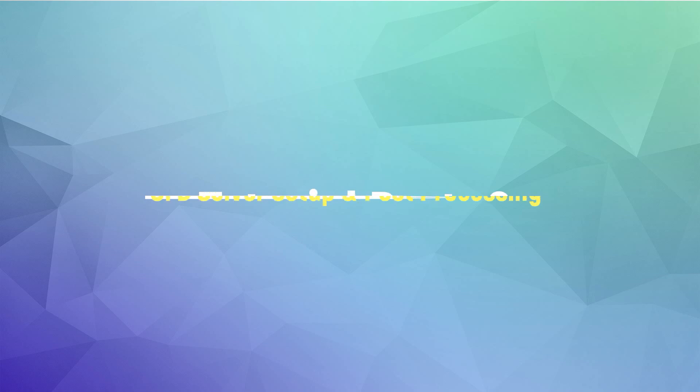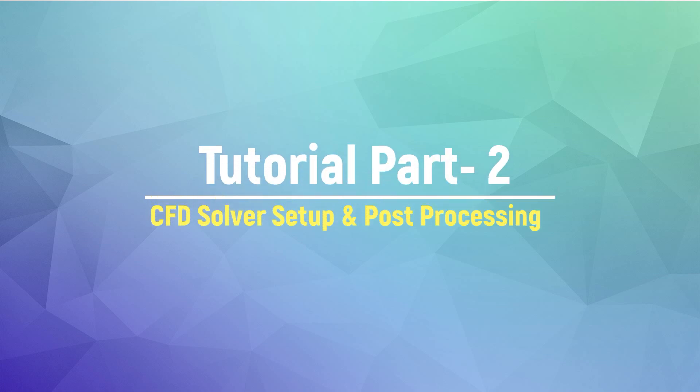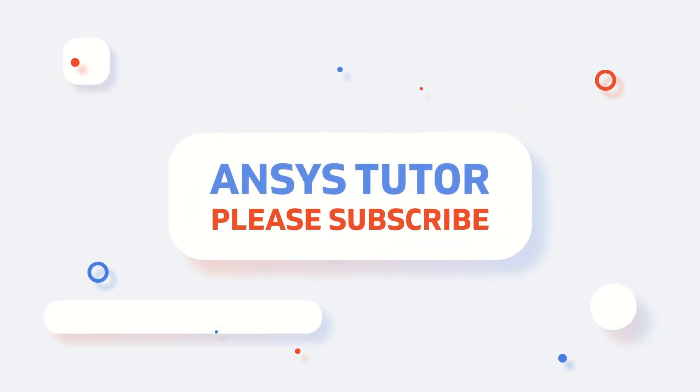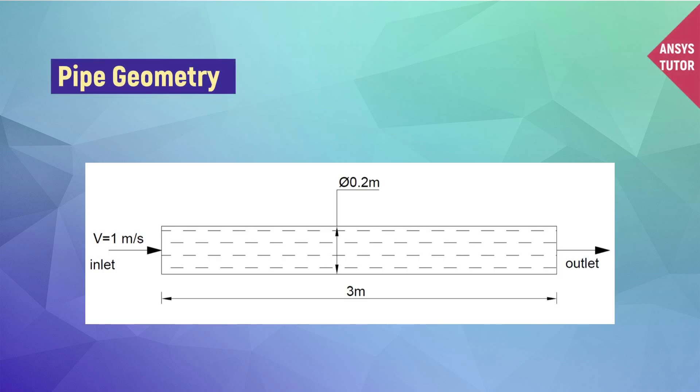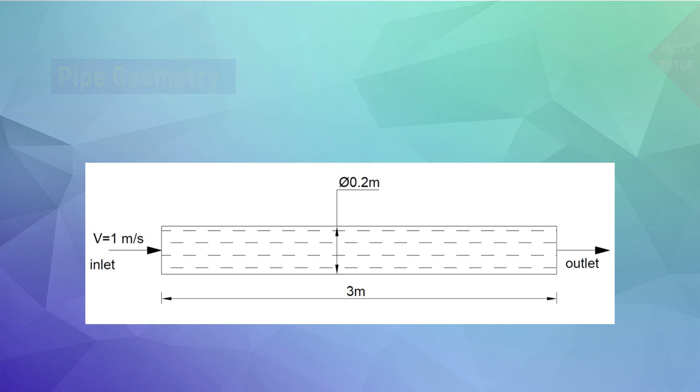This is part two of the tutorial; for geometry creation and meshing, watch part one. This is the pipe geometry — it is a three-meters-long pipe with a diameter of 0.2 meters.